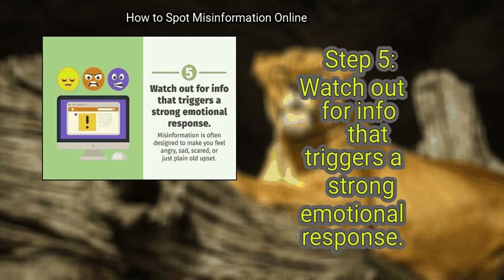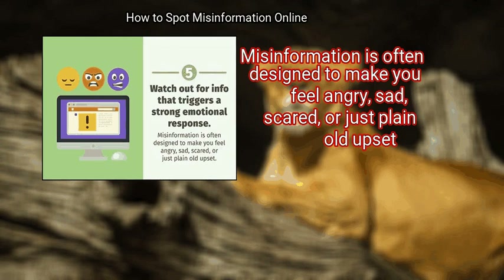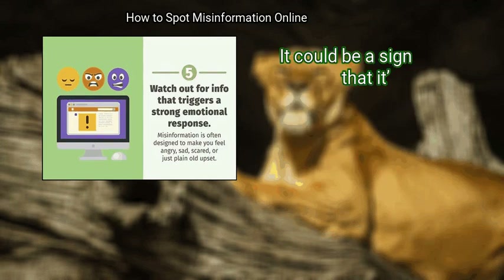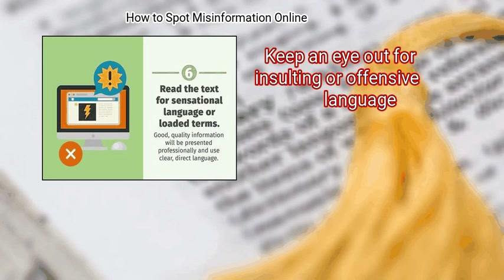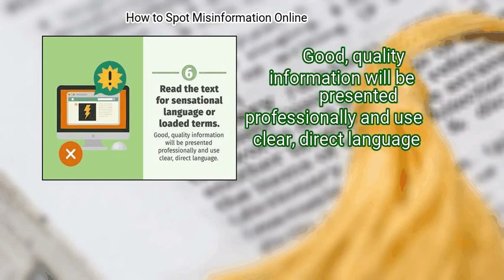Step 5: Watch out for info that triggers a strong emotional response. Misinformation is often designed to make you feel angry, sad, scared, or just plain old upset. If you spot a claim, article, headline, or any other info that causes you to feel a super strong emotion, be wary. Finally, read the text for sensational language or loaded terms. Keep an eye out for insulting or offensive language. Good quality information will be presented professionally and use clear, direct language.